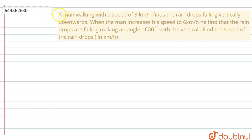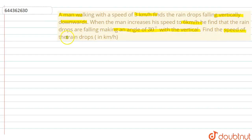A man walking with a speed of 3 kilometers per hour finds the raindrops falling vertically downwards. When the man increases his speed to 6 kilometers per hour, he finds that the raindrops are now falling and making an angle of 30 degrees with the vertical. Find the speed of the raindrops in kilometers per hour.